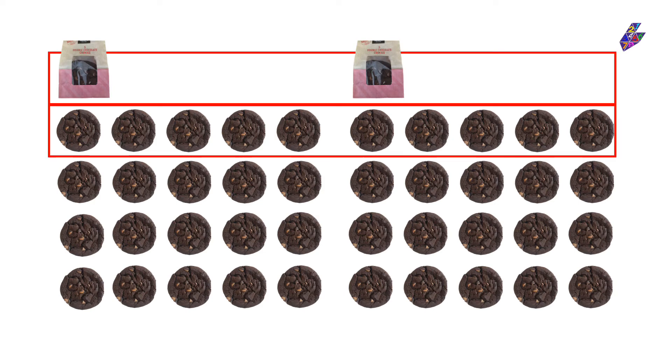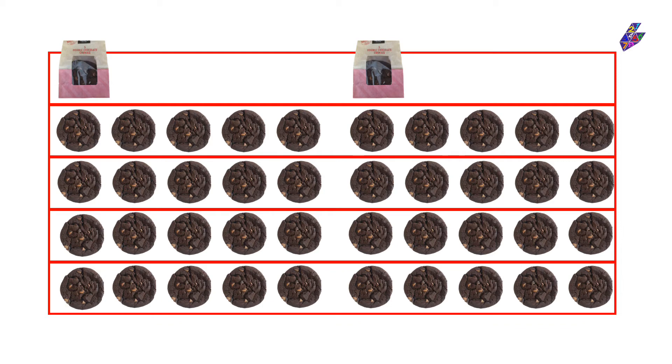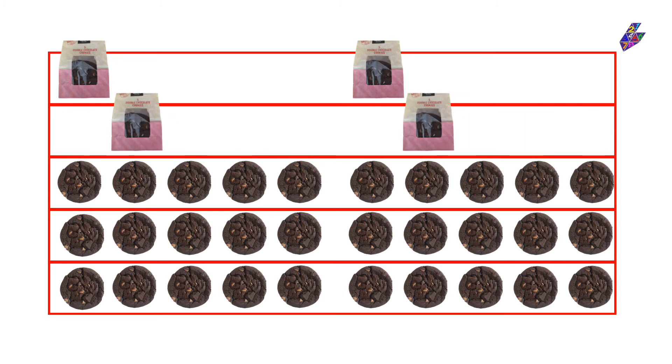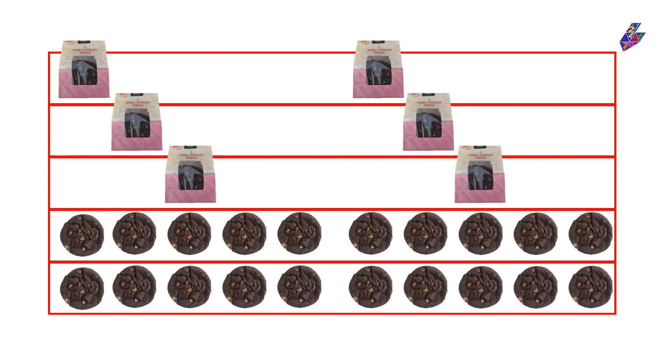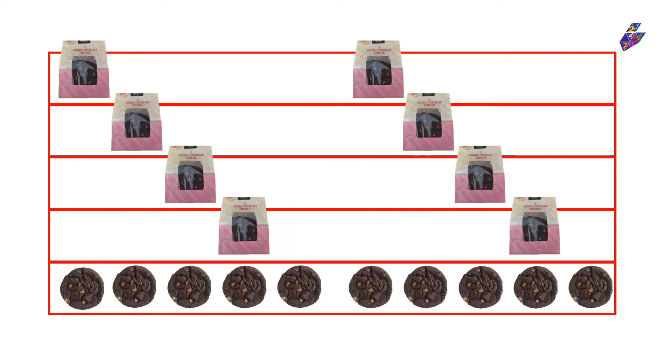Or you might have thought that if five cookies is one bag and ten cookies is two bags, you could count up in tens each time. So ten cookies would be two bags, twenty would be four, thirty would be six, forty would be eight, and fifty cookies would be ten bags — the same answer as before, just worked out a different way.